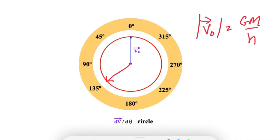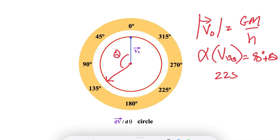And we know that this angle would be theta. And we know that the angle alpha for v₁₃₅ is going to equal 90 degrees plus theta, or 225 degrees.